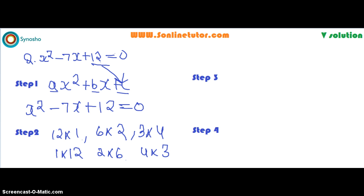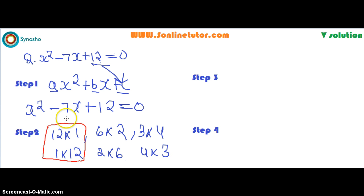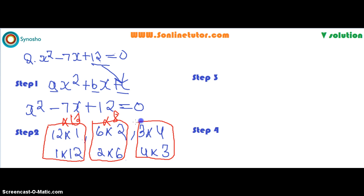To choose the appropriate factor pair for this equation, we need to choose the pair whose sum gives minus 7. Checking 12 and 1 — their sum is not minus 7. Checking 6 and 2 — their sum gives 8, and 2 and 6 gives 13. But 4 multiplied with 3: if you add both factors as minus 4 and minus 3, it gives minus 7. So we choose this factor pair.